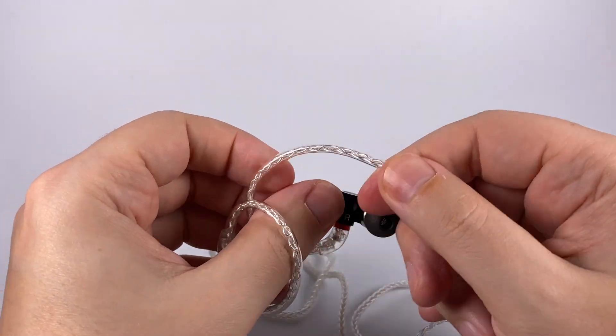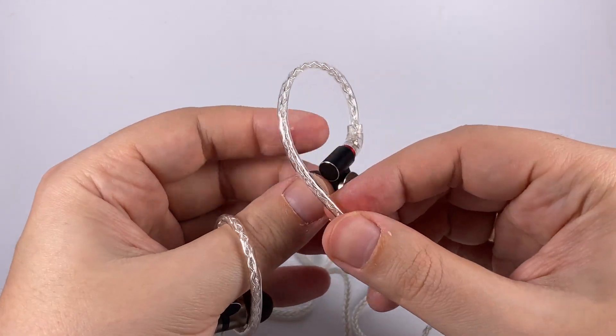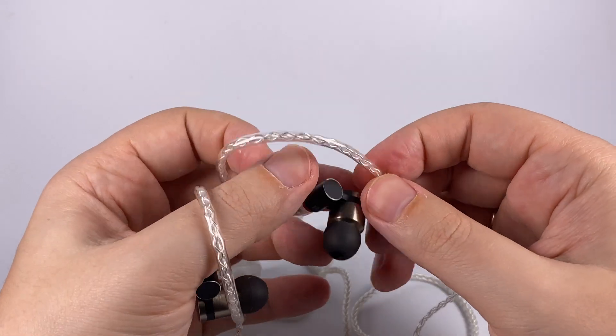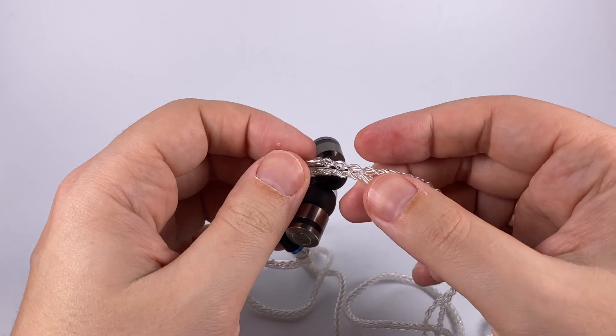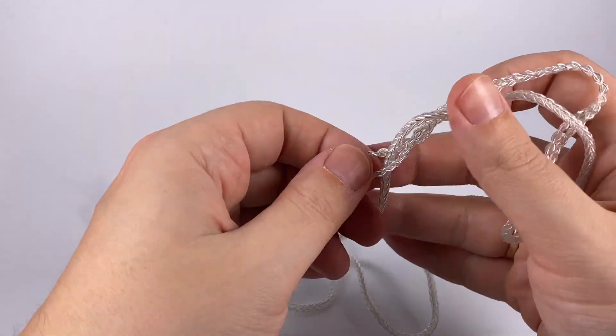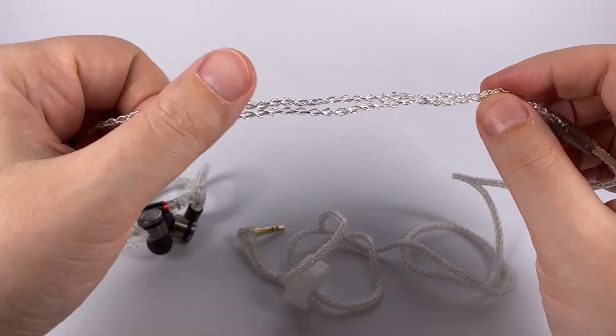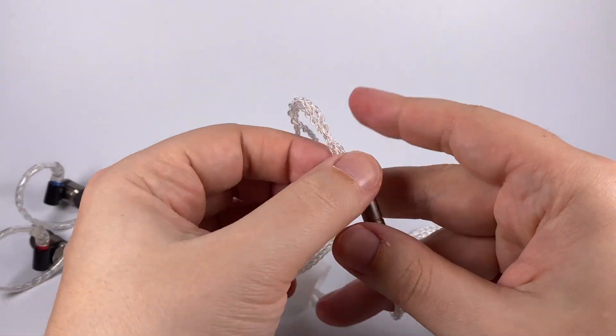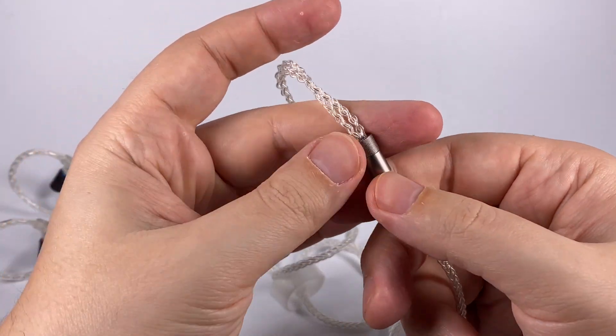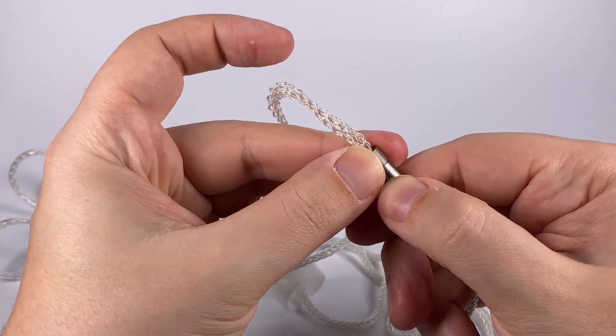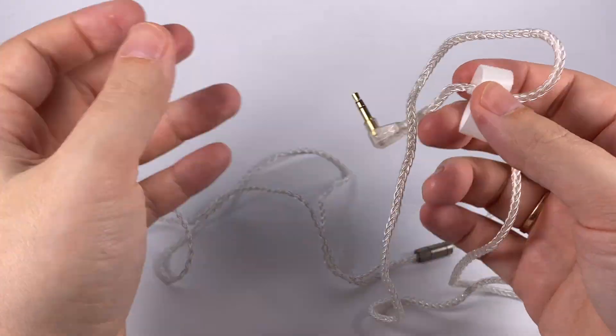Stock cable is also pretty good. You can see ear hooks are pretty stiff, but they're holding well and doing their job nicely. They reduce the microphonic effect of cable. Cable is average in terms of softness, not super soft but not super hard, something in between. Looks pretty attractive, nicely braided. Here is the splitter with chin slider, and after the splitter it goes braided down to the jack.